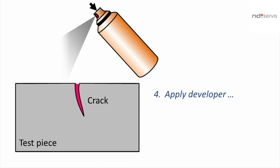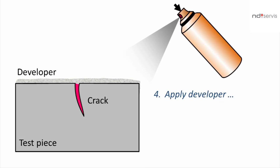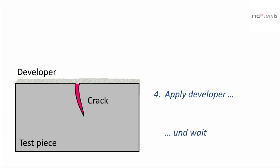After drying the test piece, a developer is applied onto the surface. The developer is a fine-grain white powder suspended in a liquid. It forms an even coating on the surface. After drying, it draws penetrant from the crack out onto the surface. The location of the crack is indicated clearly on the surface.